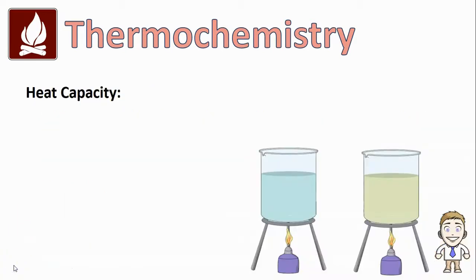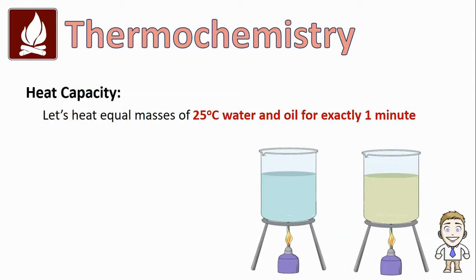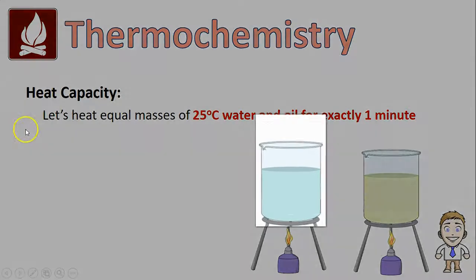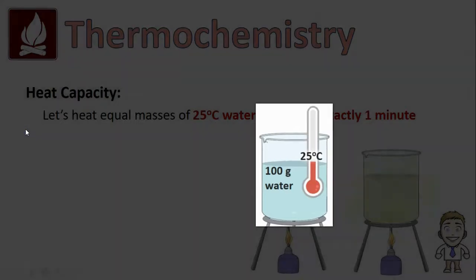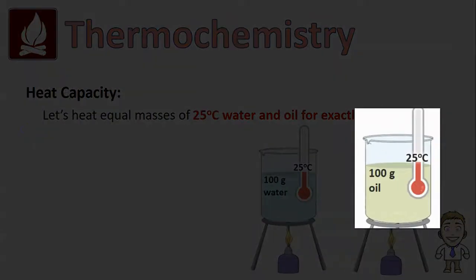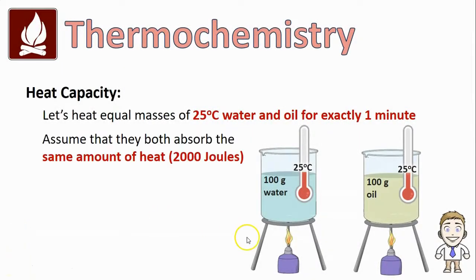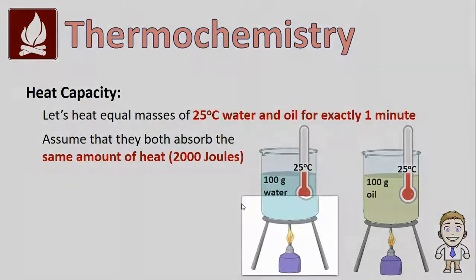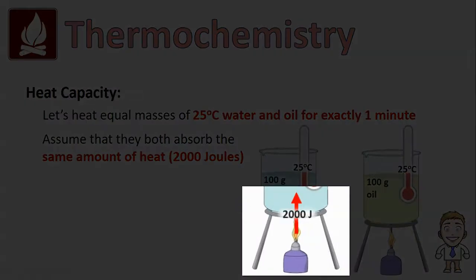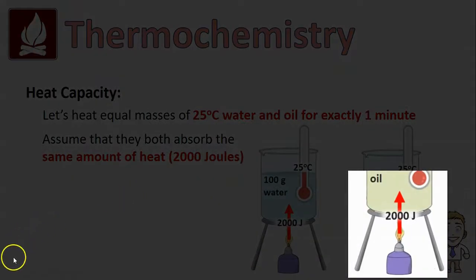The name for the property that causes this difference is heat capacity. Let's take a closer look at heat capacity with another example. Here we're going to imagine heating equal masses of 25°C water and 25°C oil for exactly one minute. I've got 100 grams of water at 25°C, and next to it 100 grams of oil also at 25°C, being heated from below with burners. Since we're heating both beakers for one minute, we can assume they both absorb the same amount of heat — 2,000 joules goes into the water and the exact same 2,000 joules goes into the oil.